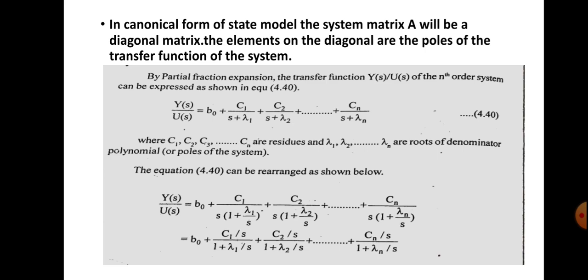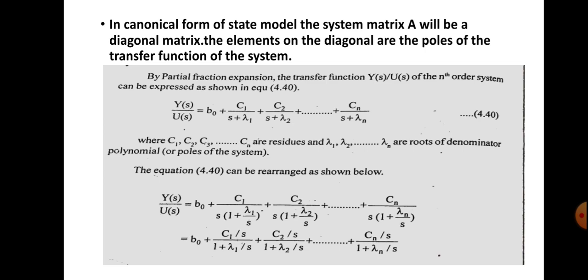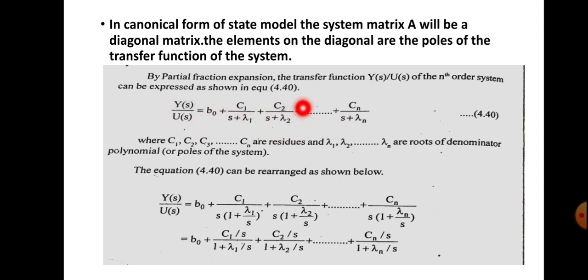Sometimes we are given with the transfer function of the system, which is Y(s)/U(s). Suppose it has the form: Y(s)/U(s) = b0 + c1/(s+λ1) + c2/(s+λ2) + ... + cn/(s+λn). The transfer function is in s-domain and we are converting it using partial fraction expansion. Here c1, c2, ..., cn are called the residues, and λ1, λ2, ..., λn are the roots of the denominator polynomial, which are the poles.